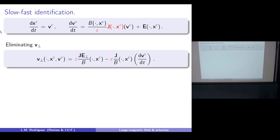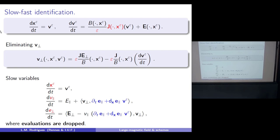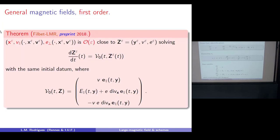You have a five-dimensional system: position, parallel velocity, and perpendicular kinetic energy. You start replacing the perpendicular velocity in the equations but you only get something correct at leading order — it is not constant. This is consistent with the 2D case where we deliberately ignored motion parallel to the magnetic field.